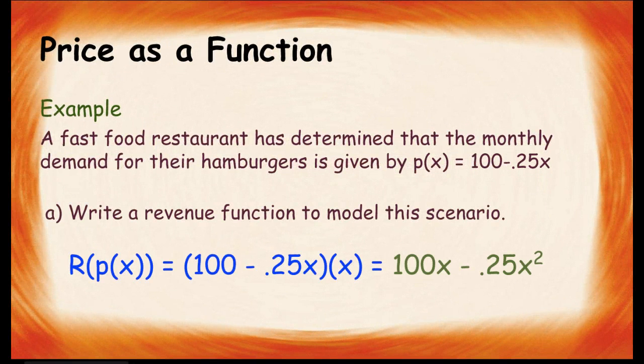Let's look at an example. A fast food restaurant has determined that the monthly demand for their hamburgers is given by this price function, 100 minus 0.25x. So, we want to write a revenue function to model the scenario. Given what we know about simple revenue functions, we would just take the price, which is 100 minus 0.25x, times the quantity sold, which is just x.